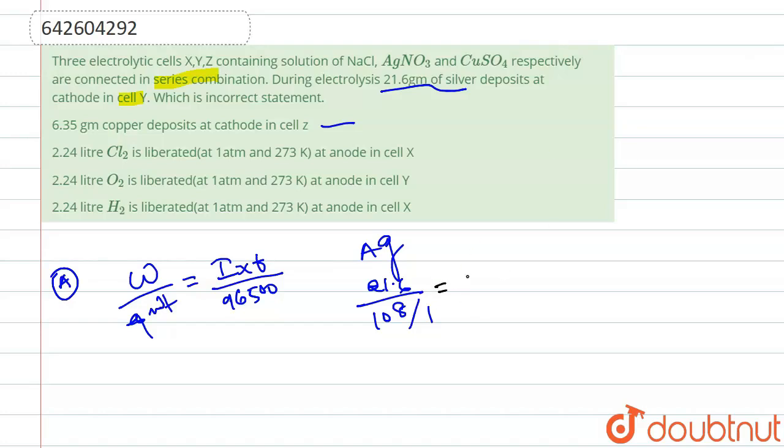This is equal to i into t upon 96500. So from here, our value of i into t equals to 19300. So this amount of electricity. Let's move further.